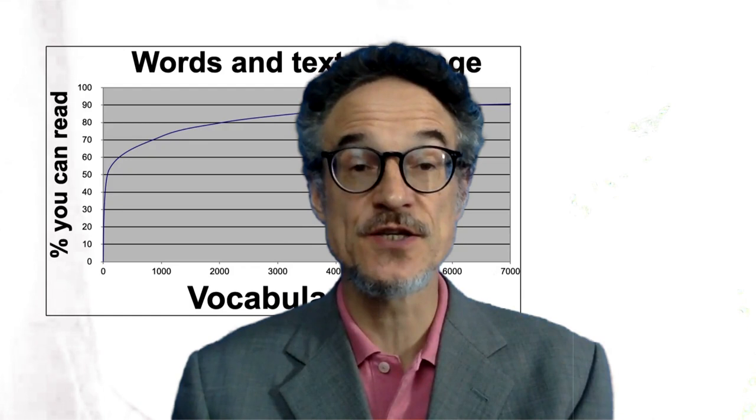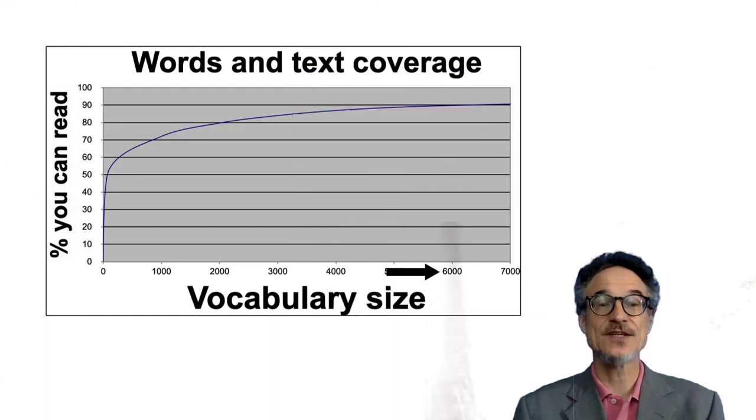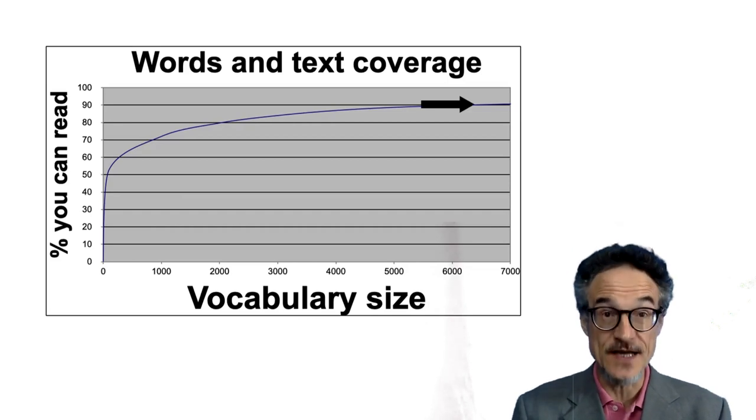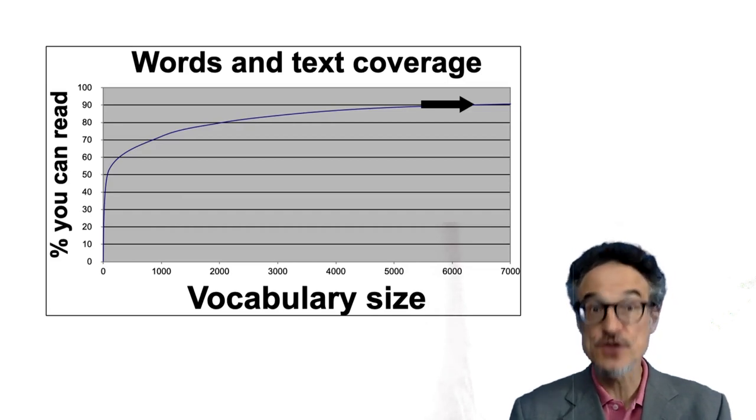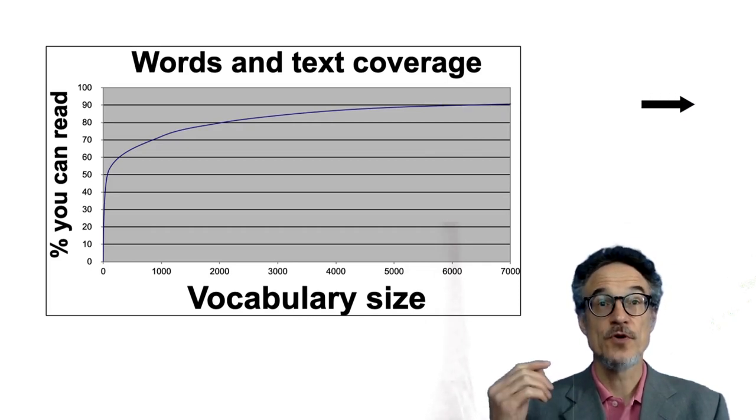Again, the less good news is that this graph goes along quite a long way. You need about six or seven thousand to get to ninety percent. And there are a lot of words in English. So this chart goes a very long way over that way.